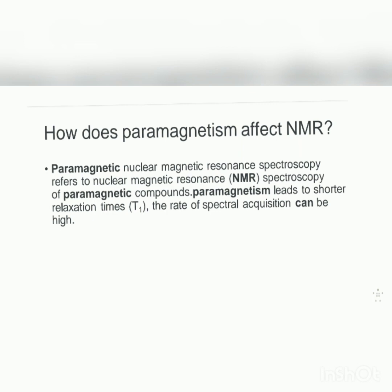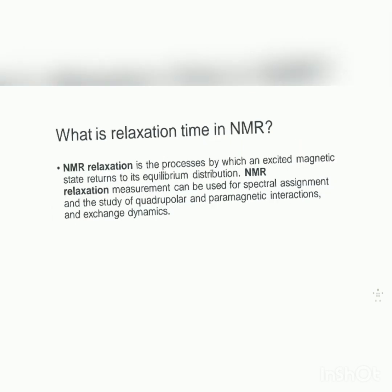Paramagnetic NMR spectroscopy refers to nuclear magnetic resonance spectroscopy of paramagnetic compounds. Paramagnetism leads to a shorter relaxation time, so the rate of spectral acquisition can be high. NMR relaxation is a process by which an excited magnetic state returns to its equilibrium distribution. NMR relaxation measurements can be used for spectral assignment and the study of quadrupolar and paramagnetic interactions and exchange dynamics.